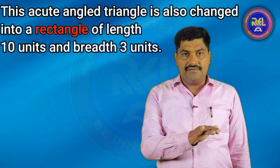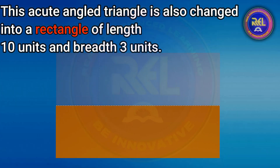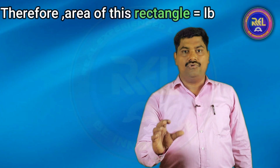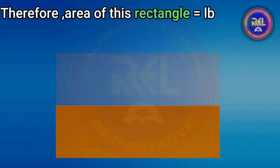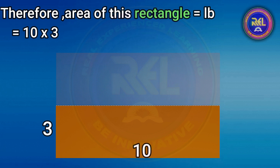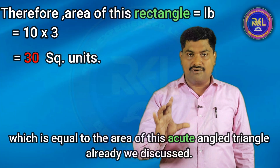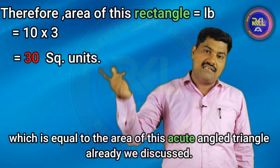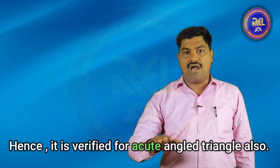This acute angle triangle is also changed into a rectangle of length 10 units and breadth 3 units. Therefore, area of this rectangle equal to L B, equal to 10 into 3, equal to 30 square units, which is equal to the area of this acute angle triangle already discussed.